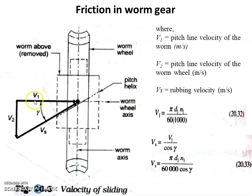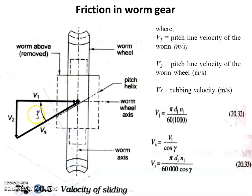V1, the pitch line velocity of the worm, is given as π·D·N1 divided by (60 × 10³), since we are expressing it in meters per second. Similarly, V2 is also calculated. With reference to V1, VS can be calculated: taking cos gamma in the right-angle triangle gives cos γ = V1 / VS, so VS = V1 / cos γ. This is the sliding velocity based on V1.